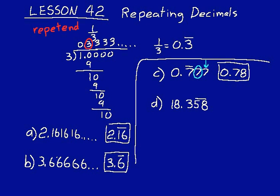Now on D, the repeatend is that 58. Rounding to the nearest hundredth, again, we just circle the 5, put an arrow over the next digit. That's an 8, so that's greater than 5, 5 or greater. We round up and we would get 18.36.